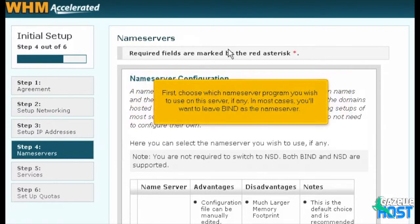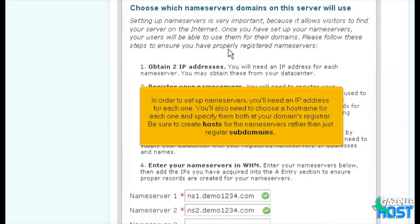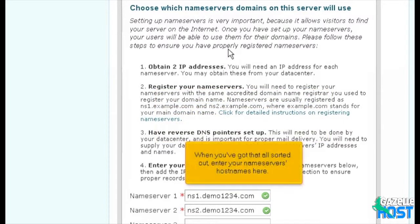Choose which name server program you wish to use on this server, if any. In most cases, you'll want to leave BIND as the name server. Scroll down. In order to set up name servers, you'll need an IP address for each one. You'll also need to choose a hostname for each one and specify them both at your domain's registrar. Be sure to create hosts for the name servers rather than just regular subdomains. Then make sure the main domain name is set to use the correct name servers. For us, ns1 and ns2.demo1234.com should be hosts on our domain as well as the name servers for the domain. When you've got all that sorted out, enter your name server's hostnames here.